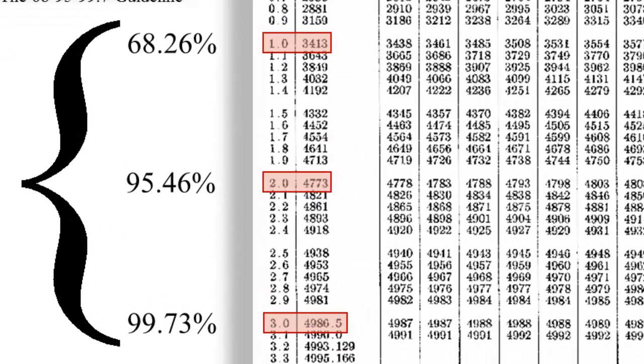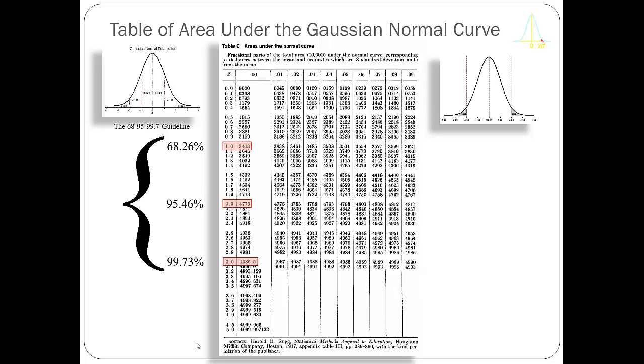Moving down to the next highlighted box where it says 2.0, which is really 2.000, you see that the area from the mean of 0 to a z-score of 2, or two standard deviation units, is 0.4773. If I say what area is under this distribution plus or minus two z-scores, I would double that number and get approximately 95.46. The third highlighted box shows a z-score of 3, and if you double the number there, you get 99.73. This is our 99.7 rule and where it comes from.